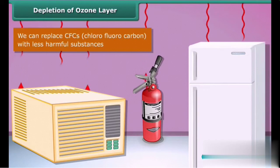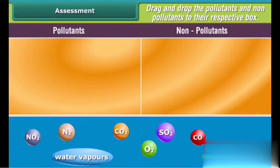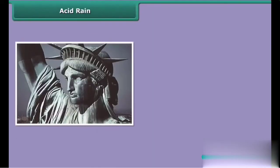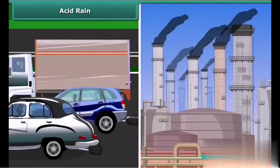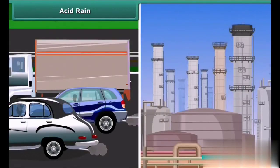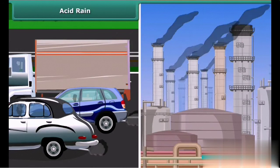Next is acid rain. The Statue of Liberty in New York and the Taj Mahal in Agra are badly damaged due to acid rain. Do you know what causes acid rain?